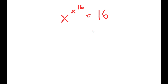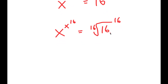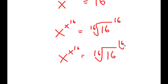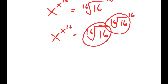From here, I'm going to write 16 as the 16th root of 16 to the power of 16. And this is the same thing as the 16th root of 16 to the power of the 16th root of 16, because 16 is the same as the 16th root of 16 to the power of 16. Notice how this is now in the form x to the power of x to the power of 16.